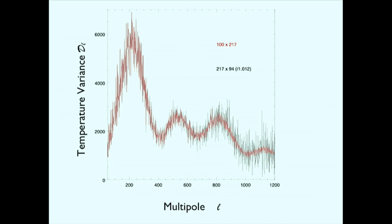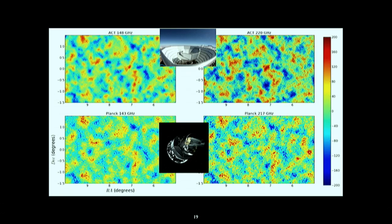This consistency is true not only when you compare the two space missions but also when you compare ground-based experiments. Zooming in on a patch about five degrees by three degrees on the sky, this shows the pattern of fluctuations seen by Planck and above it the pattern seen by ACT — at 143 and 217 GHz — and up to the levels of detector noise the two experiments see a consistent picture of what's going on in the sky.